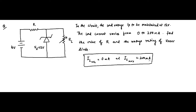We have been asked to find the value of the series resistance R, and also the wattage rating of the Zener diode — which is the product of the Zener voltage and the maximum Zener current.